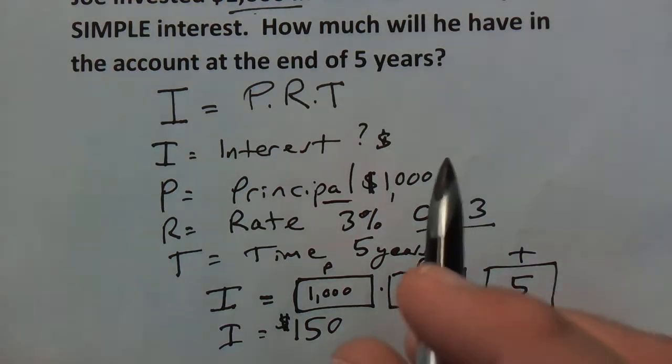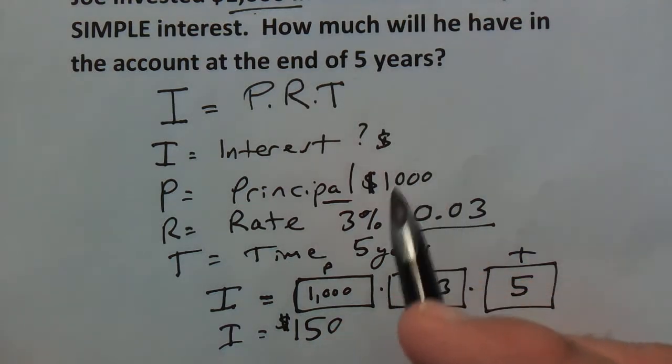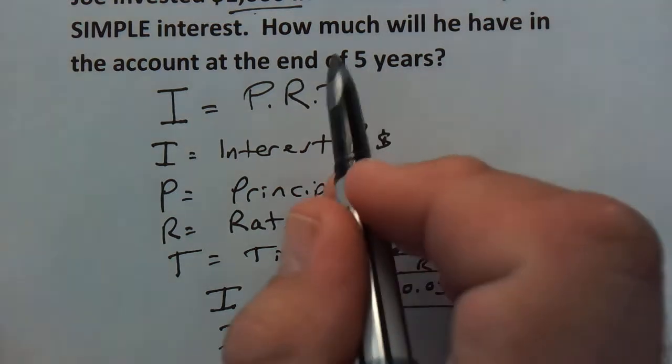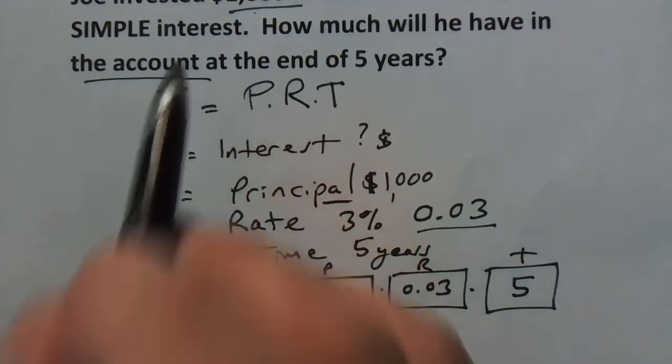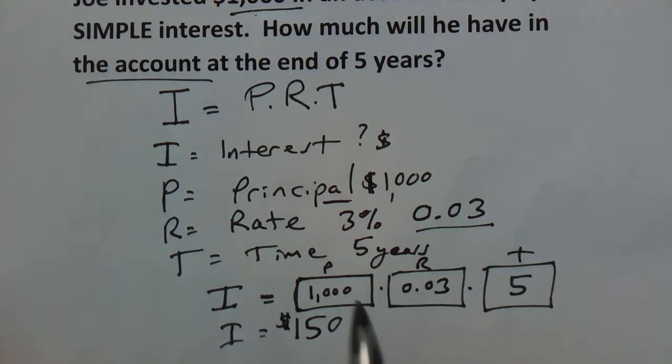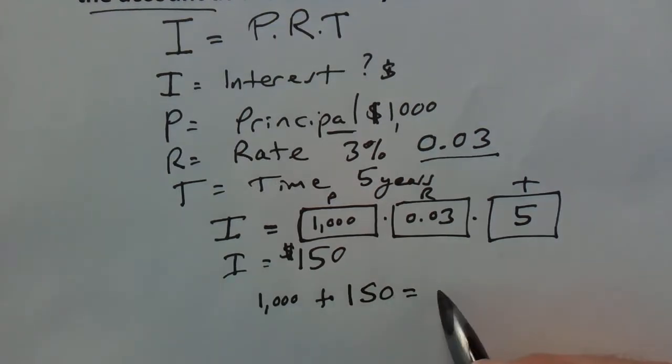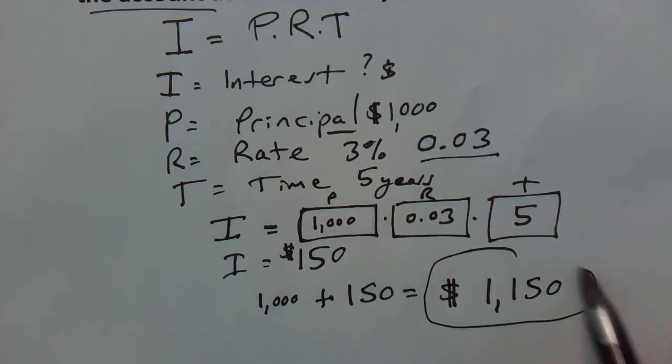However, we have to be careful because that's not what the question asked. The question did not just ask how much interest was earned. The question is how much will he have in the account? So we have to add to it the principal amount. So we have the $1,000 that he started with, we're going to add the $150 that he earns in interest and that means at the end of five years he's going to have $1,150 in that account. That is the correct answer.